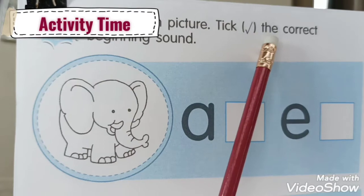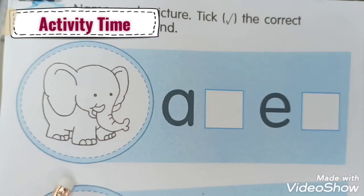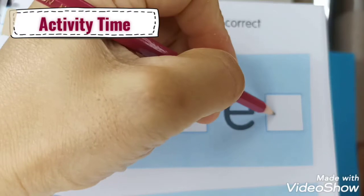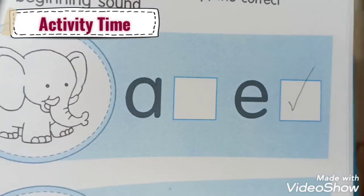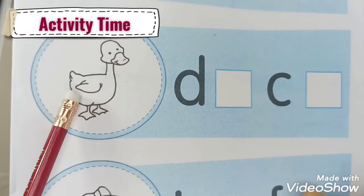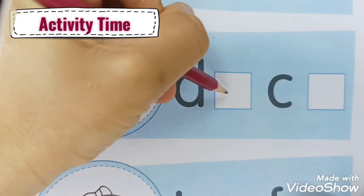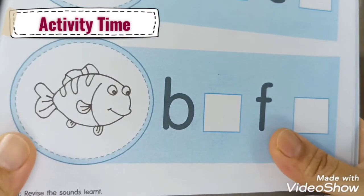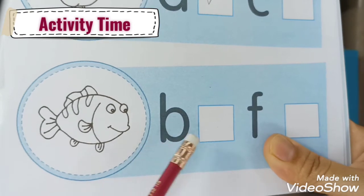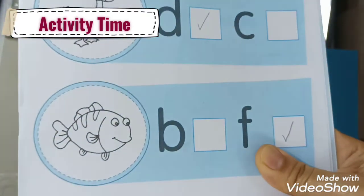For the second page, we are going to name each picture and tick the correct beginning sound. Let's start with this one — what picture is this? It's an elephant! Elephant has the sound eh, eh, so we're going to tick letter E. Next, we have the picture of a duck — duck has the sound D or K? It's the D sound — duck. And the last one — what's this? It's a fish! Fish has the sound F, F, F — fish. We're going to tick letter F.